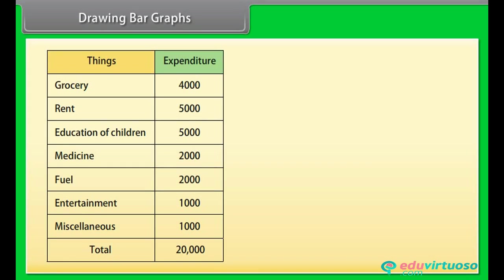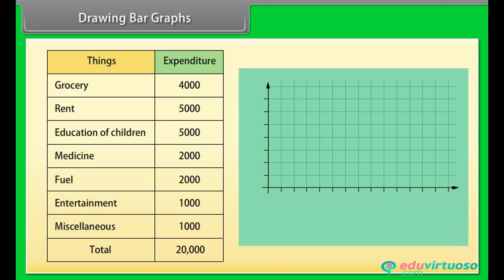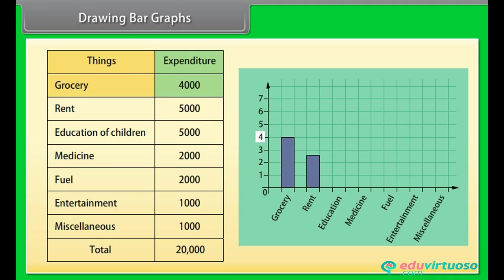Drawing bar graphs: Now we will learn how to draw the bar graph. Look at this table — it shows the expenditure of a family with a monthly income of 20,000. For making the bar graph, we use the items on the horizontal axis and expenditure on the vertical axis. Here one unit means one thousand. To represent grocery, we make a bar of unit four. Similarly, other items are represented, leaving a gap of one unit between consecutive bars.